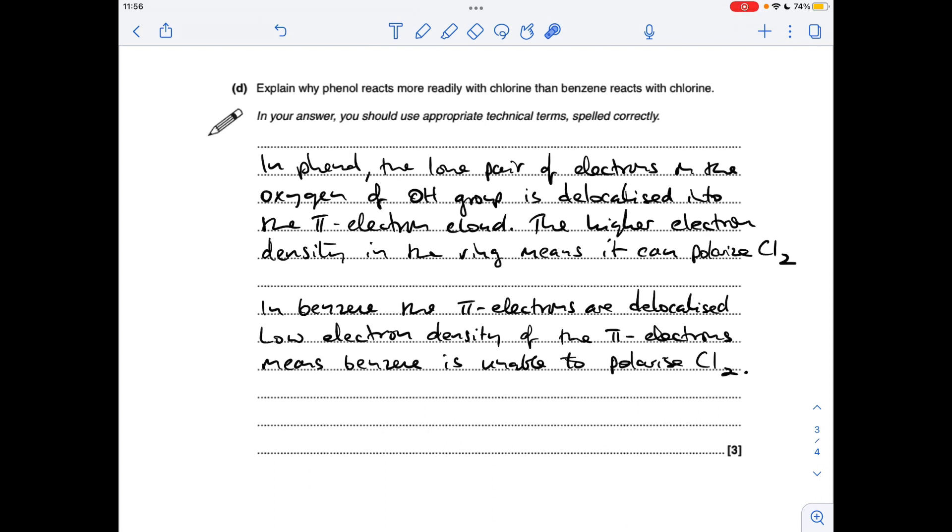In benzene, we need to say the pi electrons are delocalised, so they have a lower electron density, and that means that benzene is unable to polarise chlorine. That's why it needs a catalyst in its reaction.